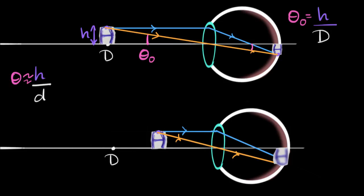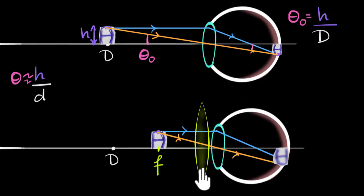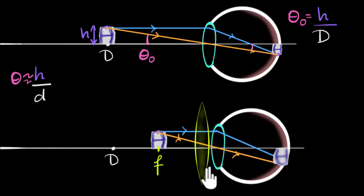A magnifying glass is just a convex lens. Let's say we bring our object exactly at the principal focus of this convex lens. We're dealing with very thin lenses, so we can assume the optic center of this lens is at the same location as the optic center of the eye lens. The ray passing through the optic center pretty much remains the same, so the angle subtended by the object still remains the same at the eye — the size of the image in the retina won't change.